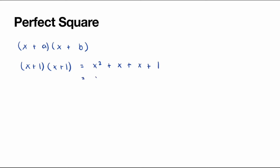And we can write this as x squared plus 2x plus 1. So we say x squared plus 2x plus 1 is a perfect square. Also, the term x plus 1 multiplied by x plus 1 can also be written as x plus 1 squared.